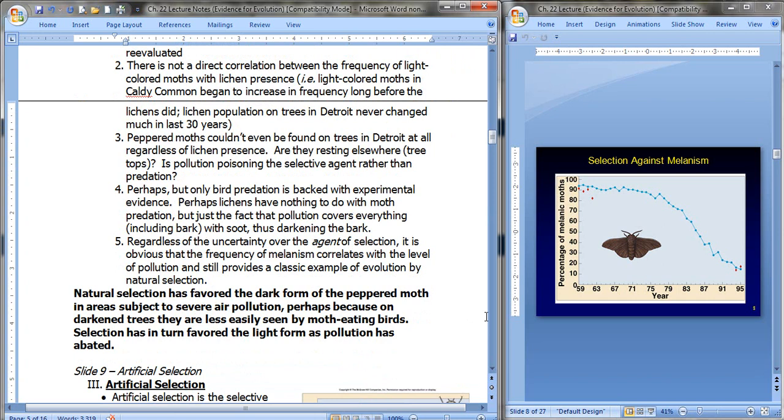Regardless of the uncertainty over the agent of selection, it's obvious that the frequency of melanism correlates with the level of pollution and still provides a very classic example of evolution by natural selection. So the point here is that natural selection has favored the dark form of the peppered moth in areas subject to severe air pollution. Perhaps because on darkened trees they're less easily seen by moth-eating birds, selection has in turn favored the light form as pollution has abated or gone away. So I'm going to stop there and you'll see a few more installments of this lecture.